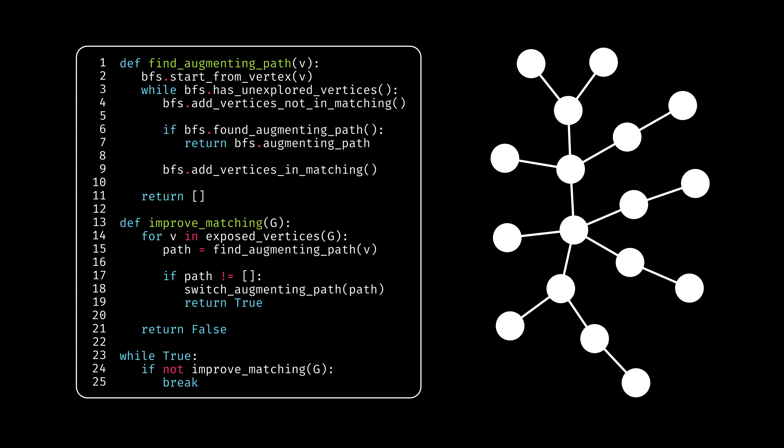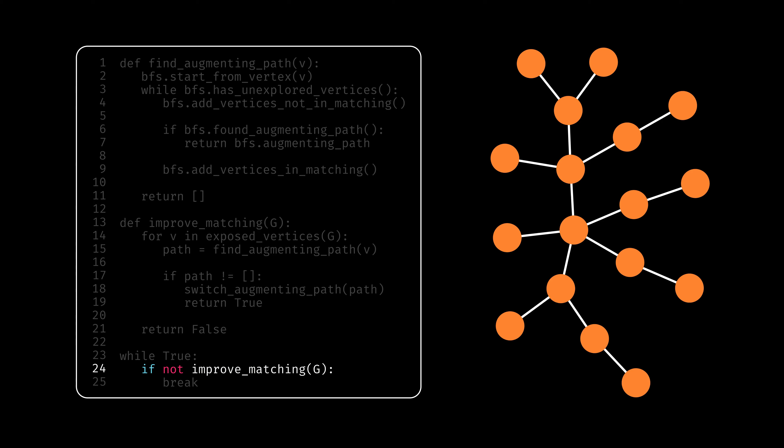To better understand how this all works, it will be best to see an example. Initially, every vertex is exposed, since the matching is empty. The algorithm then picks one exposed vertex at random, and runs the BFS. Here it successfully finds an augmenting path, so it uses it to improve the matching, and repeats.